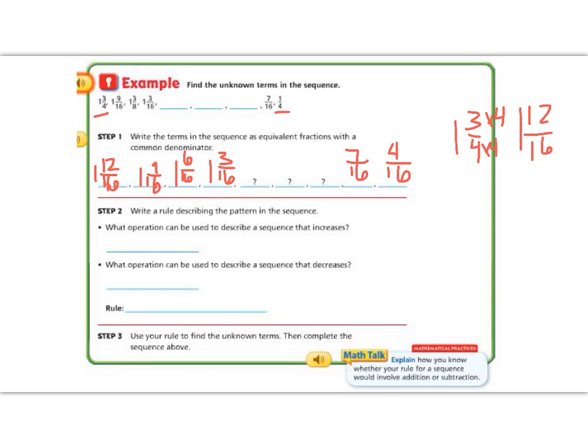So I went from 1 12/16 to 1 9/16, 1 6/16, 1 3/16, then some gaps, then 7/16, then 4/16. So now that we know everything in 16ths, let's look at step 2.